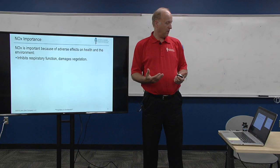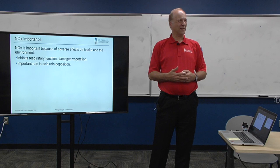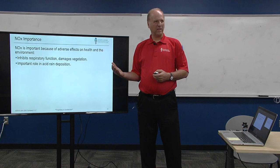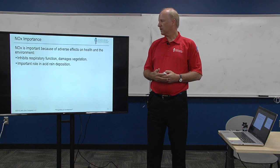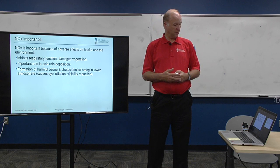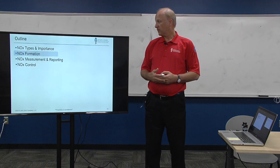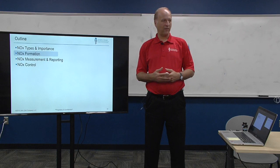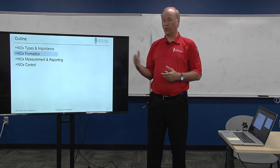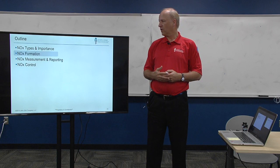Why is NOx important? There are lots of bad things about it. It inhibits respiratory function, damages vegetation, plays an important role in acid rain — when water in the atmosphere reacts with NOx it can make nitric acid. It can generate or participate in making ozone and photochemical smog, causes eye irritation and visibility reduction. N2O is also a depleter of the good ozone in the upper atmosphere. Which is why in many places, especially the United States, it's heavily regulated — the toughest regulations are probably in California, with Texas and parts of Europe like Germany, France, and Britain also fairly stringent.